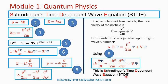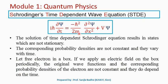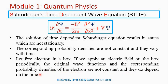Some books write it as TDSE also. The STDE is: −ℏ²/2m · ∂²ψ/∂x² + V·ψ = iℏ·∂ψ/∂t. If we find the solution of this time dependent equation, it results in non-stationary states where the corresponding probability densities are not constant and vary with time. For example, a free electron in a box with a periodically applied electric field will have wave functions and probability densities that depend on time.